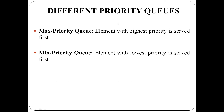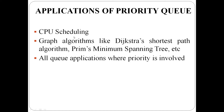Different types of priority queues — there are two types: max priority queue and min priority queue. In a max priority queue, the element with the highest priority is served first. It is used in graph algorithms like Dijkstra's shortest path algorithm, Prim's minimum spanning tree algorithm, and all queue applications where priority is involved.